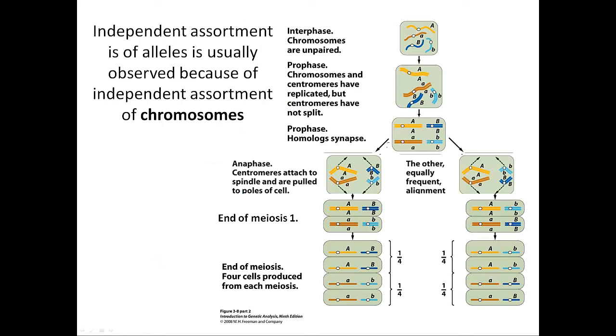As we talked about before, independent assortment occurs because of the movement of chromosomes during meiosis. This is just a review of what happens when you have a dihybrid cell going through meiosis.